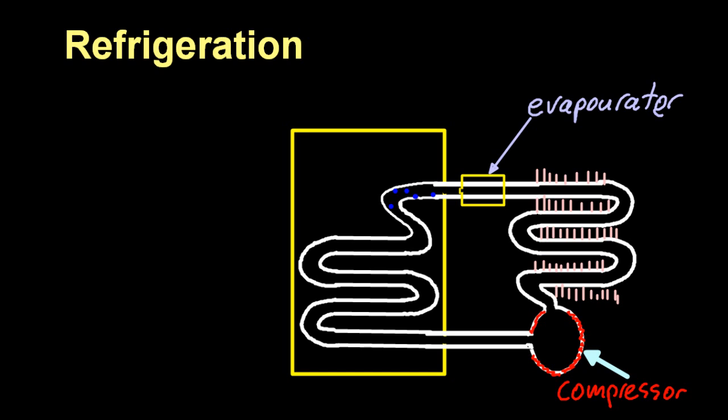So these cold gas particles move down the tube. And as they move down the tube, they absorb heat, they absorb energy from the contents of the fridge. And so the gas particles themselves gradually warm up and the fridge gradually cools down.